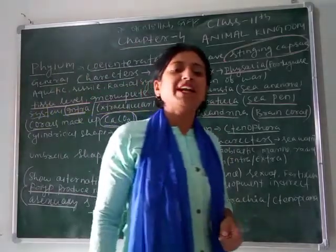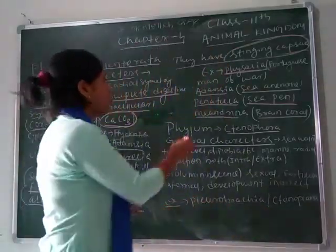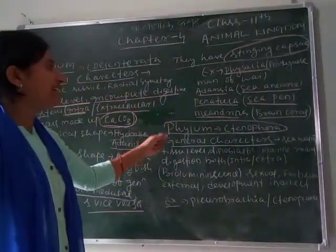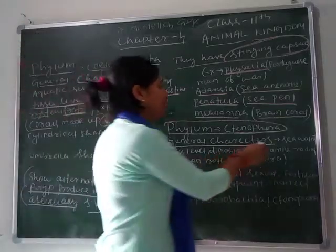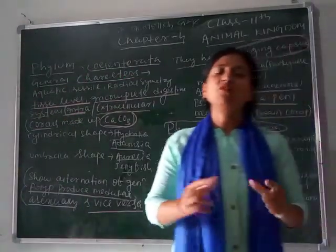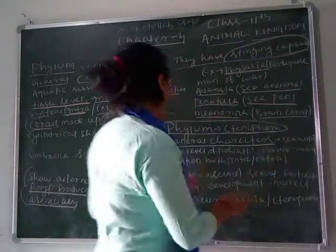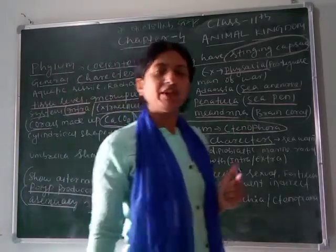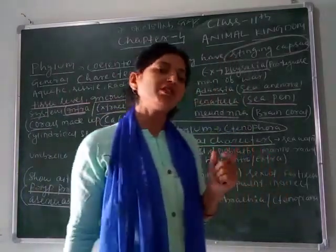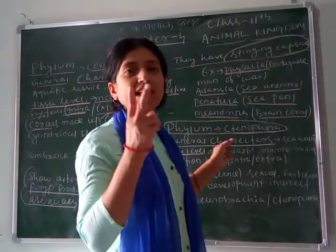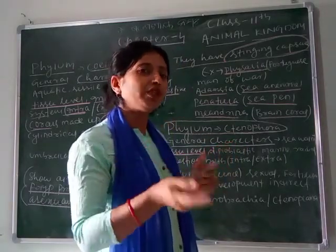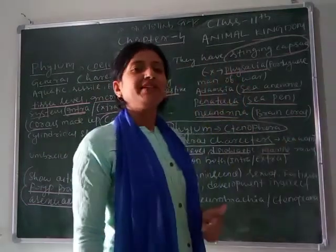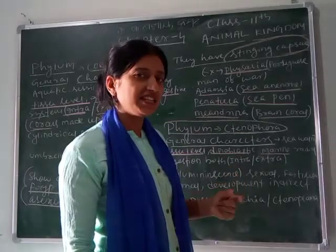Next phylum is Ctenophora. Their general characters: Ctenophora are commonly called sea walnuts — they look like walnuts. They have tissue level of organization and are diploblastic, meaning they have two germinal layers: ectoderm and endoderm. They are marine, living in oceans, seas, or salty water.